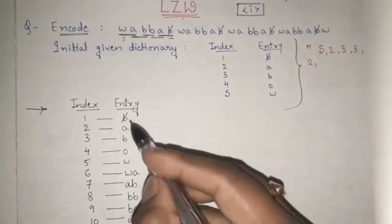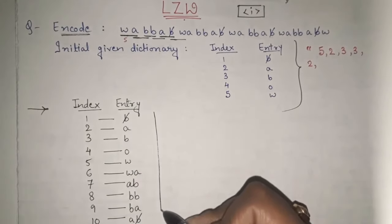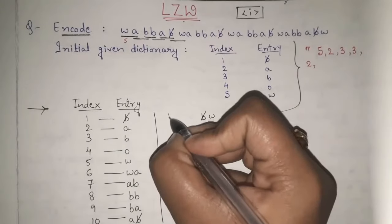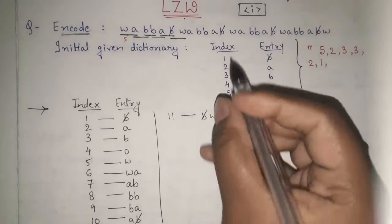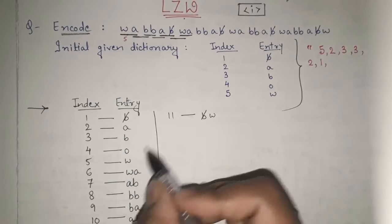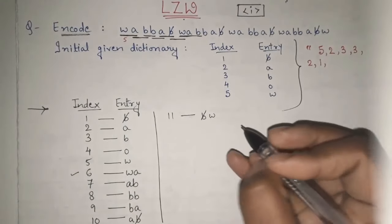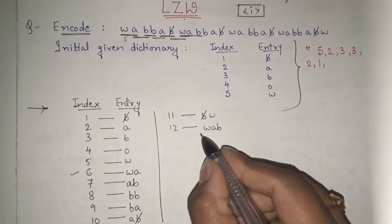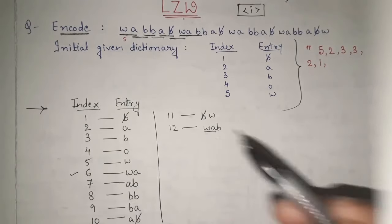Then W: W is present. WA is also present. So I take one more character — WAB. WAB is not present. I add WAB at index 12 and send the code for WA, which is 6. Then starting with B: BB is present. BBA is not present. So I add BBA at index 13 and send the code for BB, which is 8.